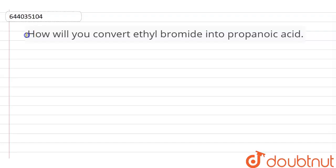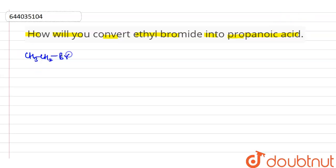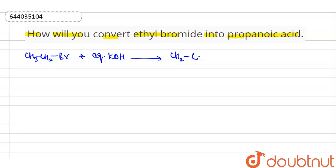Here is a question: how will you convert ethyl bromide into propionic acid? When ethyl bromide, that is CH3CH2Br, is reacted with aqueous KCN, it will convert into ethyl cyanide, that is CH3CH2CN.